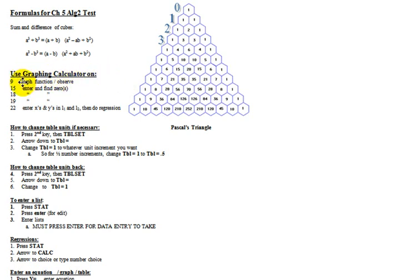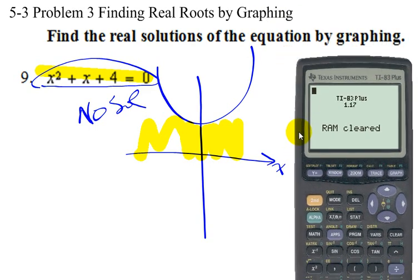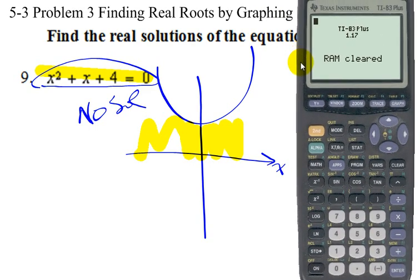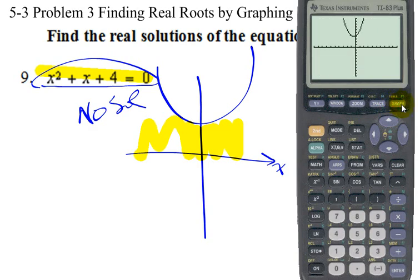It says to use your graphing calculator on problems 9, 15, 18, 19, and 22, and I give you specific hints on how to work each one. For number 9, it says graph the function and observe. Number 9 says find the real solutions of the equation by graphing. You can put this into the graphing calculator quite easily — don't forget to clear your RAM and reset your defaults, then go to Y= and type in the equation x² + x + 4. Press enter and graph, and you notice that it never touches the x-axis, so there's no real solution.